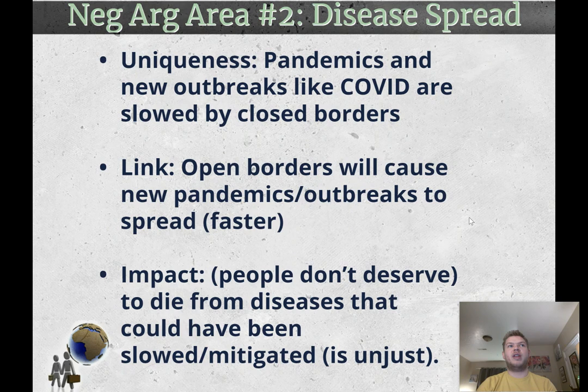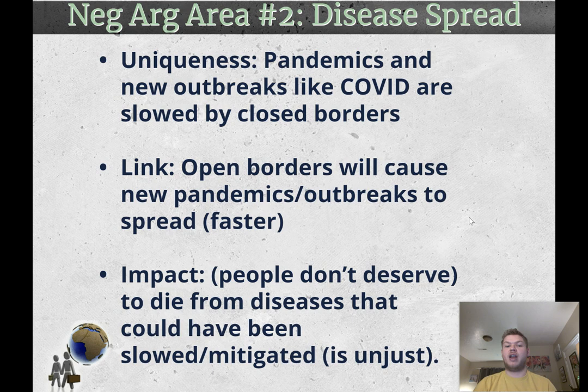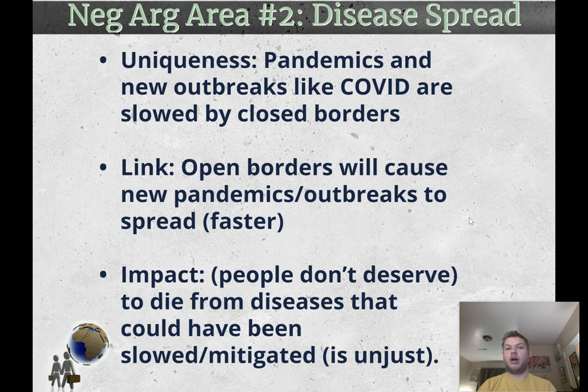The second negative argument is disease spread. This is an argument you need to be very careful about phrasing — it is not that immigrants are dirty and carry diseases. The argument is that under a situation like COVID-19, controlled borders allowed us to slow disease spread at least somewhat, because restrictions on migration prevented people from bringing an outbreak from one place to another. If we have open borders and declare it unjust for borders not to be open, then in future pandemics, disease would spread even faster. The impact: people don't deserve to die from diseases that could have been slowed or mitigated.